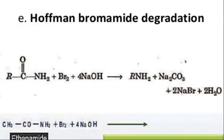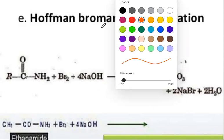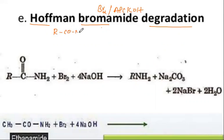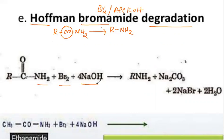The next very important method — which is frequently asked in examinations — is the Hofmann bromide reaction, also called Hofmann bromide degradation. Here, bromine liquid and alcoholic KOH base are used. Amides upon this degradation produce amines. In the mechanism, consider an amide R-C(=O)-NH2 — it contains two hydrogen atoms on nitrogen.